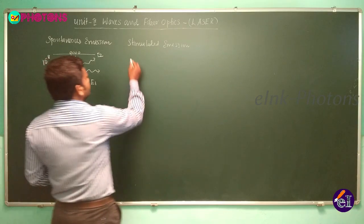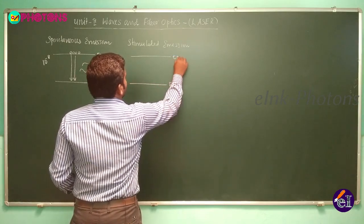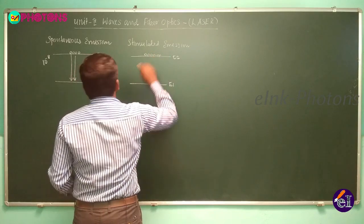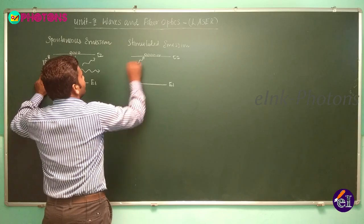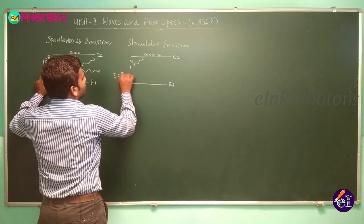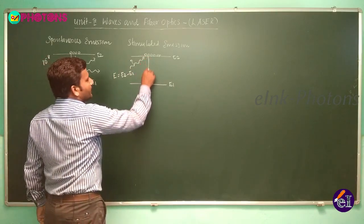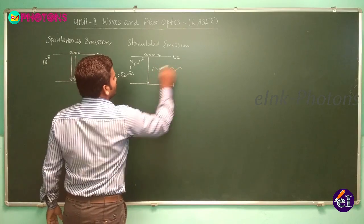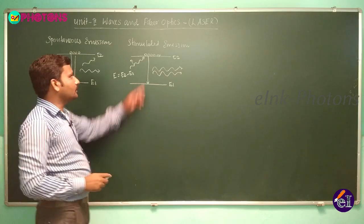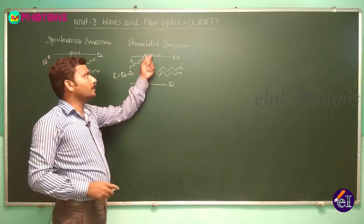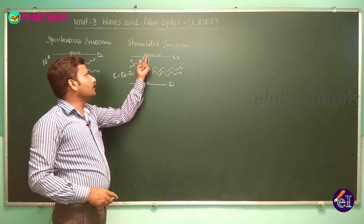In stimulated emission, consider a 2-level energy system. Electrons exist in excited states for about 10⁻⁸ seconds. An external photon with energy E is applied. When the electron is in the ground state, one photon is absorbed, causing the electron to reach the excited state.